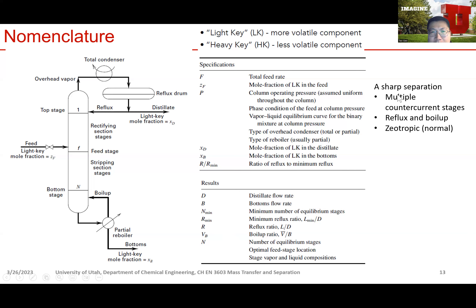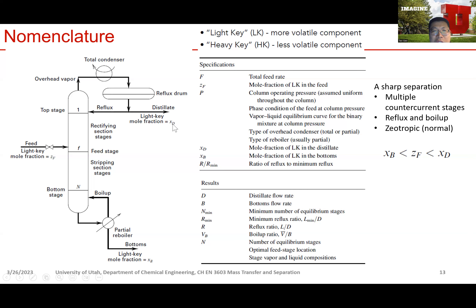To get sharp separation, we require multiple countercurrent stages so that the liquid and vapor can contact sufficiently. We need reflux and boilup, and typically a zeotropic — that means a normal — system. For a distillation column, xb (the mole fraction in the bottom) is going to be lower than the feed Zf, which is lower than the distillate xd. The distillate is enriched with the light key component so it has a large xd, the bottom is enriched with the heavy key so it has a small xb, and Zf is right in between.